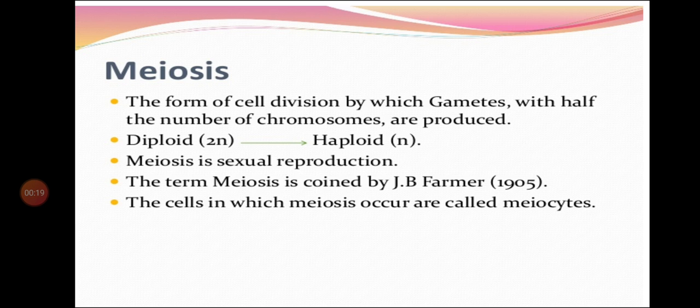In our last lectures, we studied about the cell cycle, then mitosis and its stages — prophase, metaphase, anaphase, telophase — then cytokinesis and its significance, cytokinesis in plant cells and animal cells, and also the death of a cell.